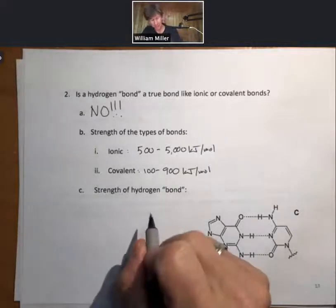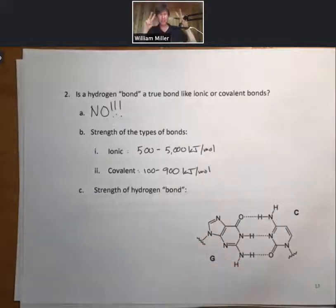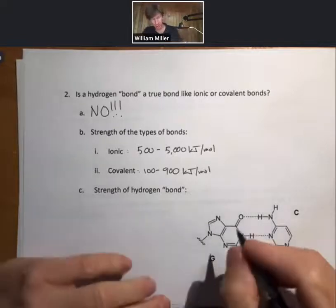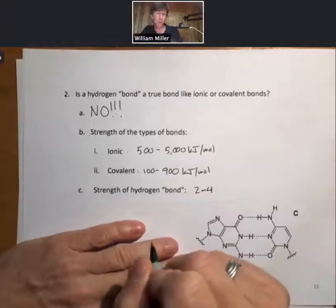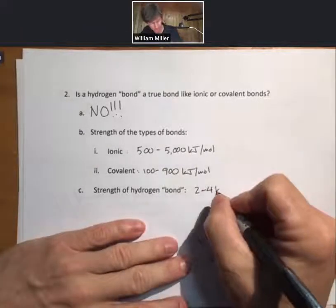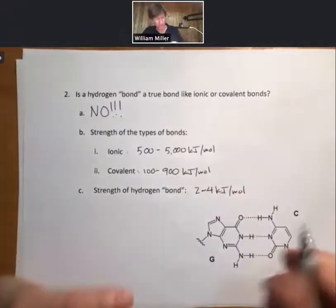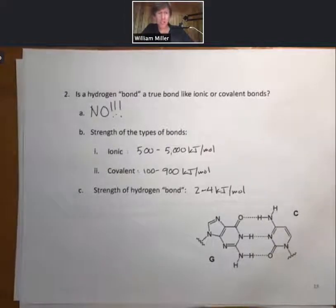And then the strength of a hydrogen bond—bond with air quotes around it—I would say typically two to four kilojoules per mole. So much weaker. It is a strong version of dipole-dipole forces. However, if you look at a tiny section of DNA with guanine and cytosine,